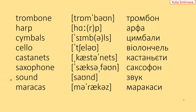Before we start, let's remember the new words. Trombone – тромбон. Harp – арфа. Cymbals – цимбалы. Cello – виолончель. Castanets – кастанеты. Saxophone – саксофон. Sound – звук. Maracas – маракаси.